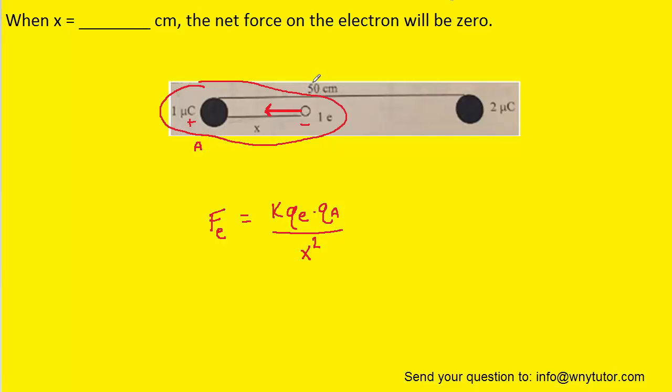Next, we can examine the interaction between the electron and the other charge over here. And again, because the electron is negative and this charge is positive, there will be an electrostatic force between them. And that electrostatic force will equal the constant times the charge of the electron times the charge of this object, which we can call B, divided by the distance between them squared.